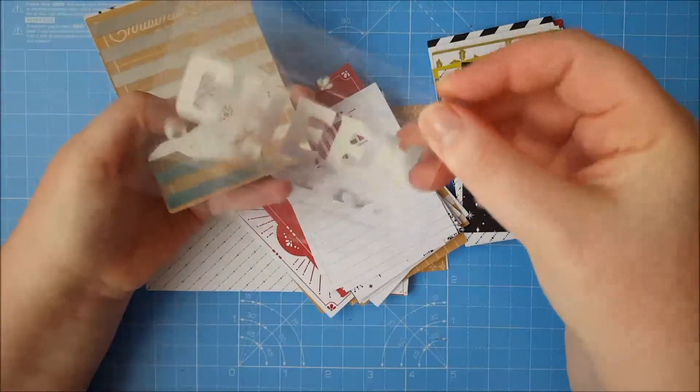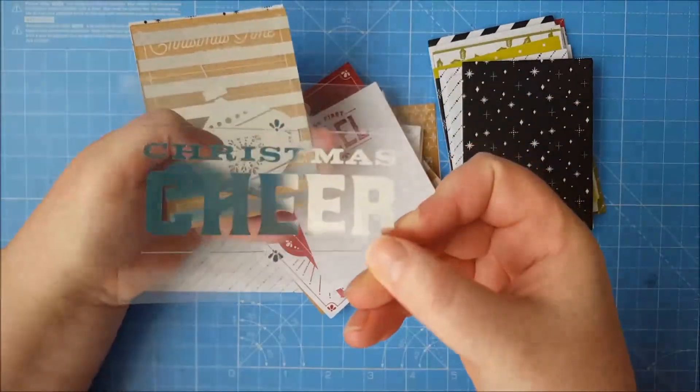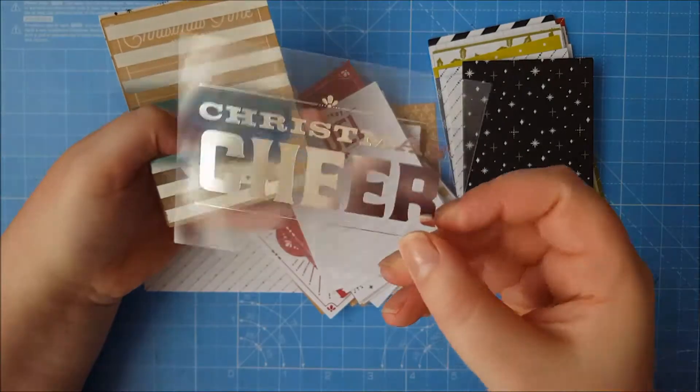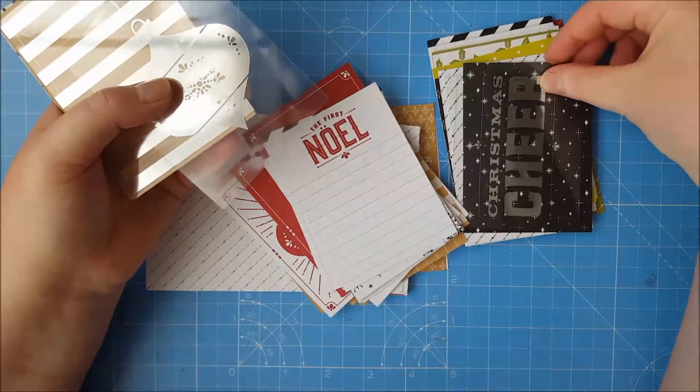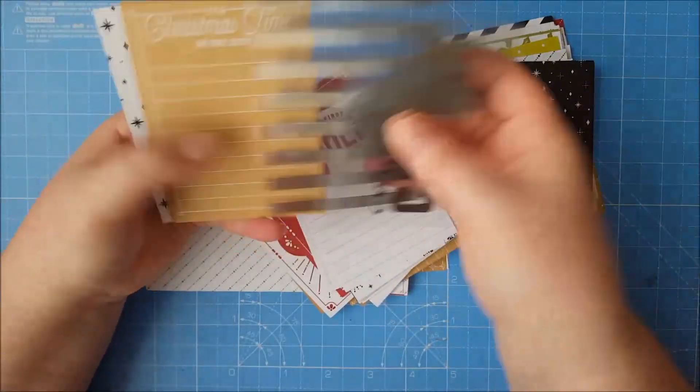And you get some of these acetate ones. So around the right way. So Christmas tree, you can put that over a photo or over a pattern. Got some more there.